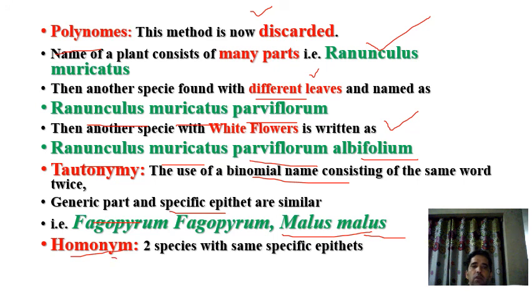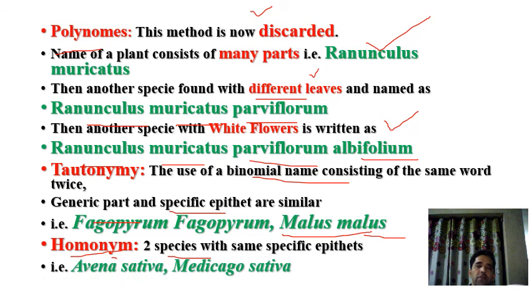Homonomy means assigning two species the same specific epithet. For example, Avena sativa and Medicago sativa — both have the epithet 'sativa.' This is called homonomy.